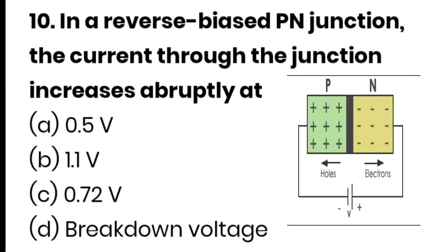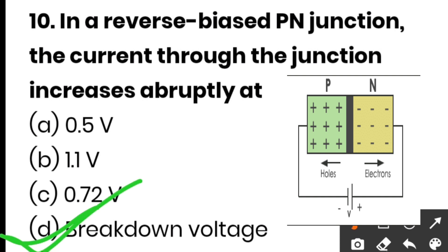The next question: in a reverse-biased PN junction, the current through the junction increases abruptly at — option A is 0.5 volt, option B is 1.1 volt, option C is 0.7 volt, option D is breakdown voltage. Options A, B, and C are not correct. The correct answer is option D — breakdown voltage. This completes the objective questions.